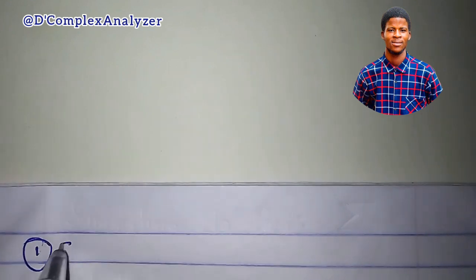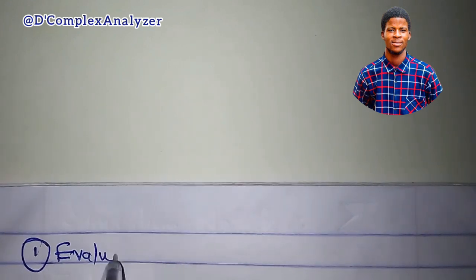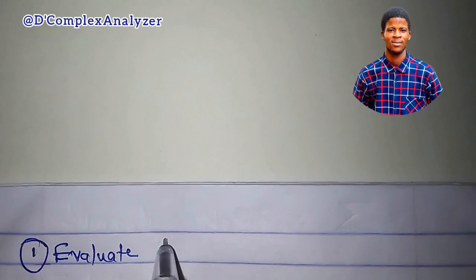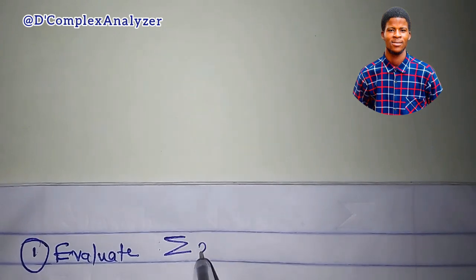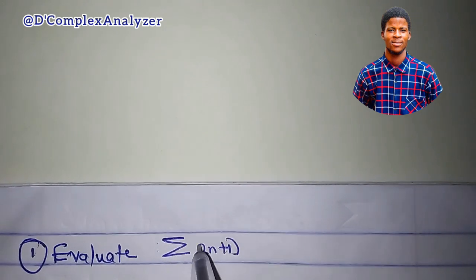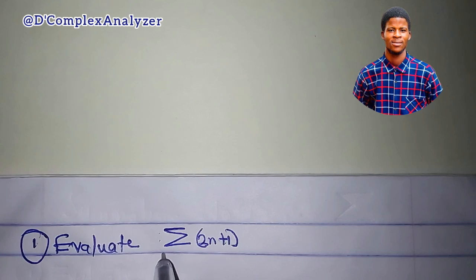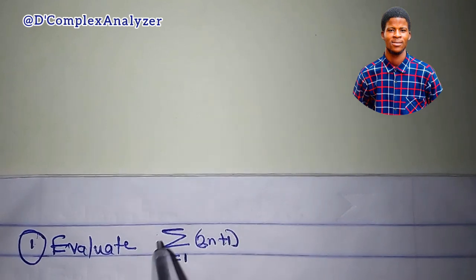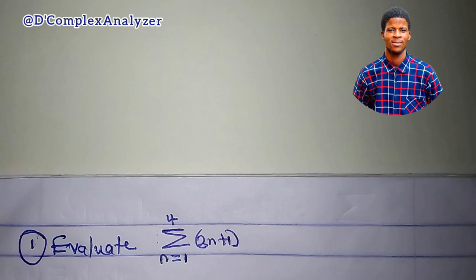For example, I want to evaluate the summation of 2n plus 1. This is the expression. The starting value of n is 1, and it ends at 4. So, what is the summation equal to?